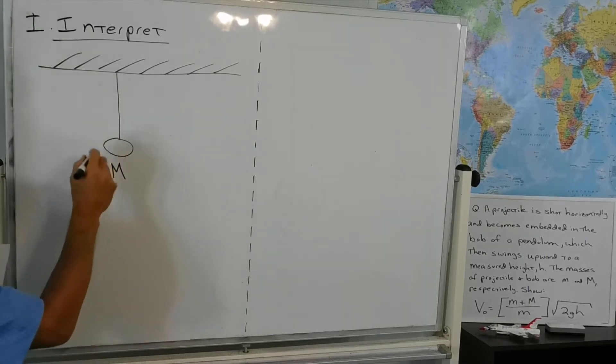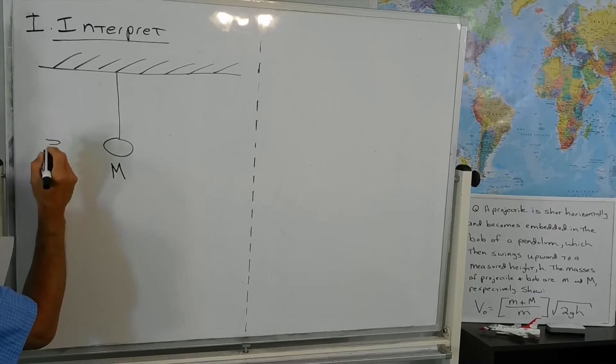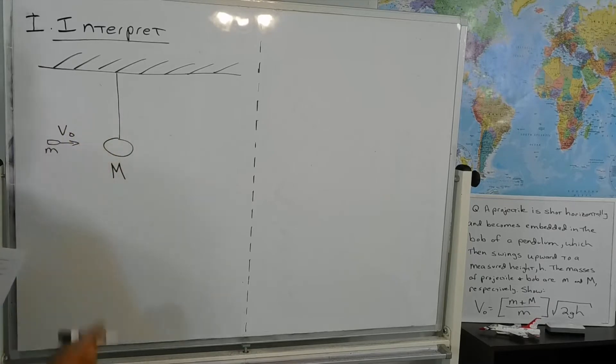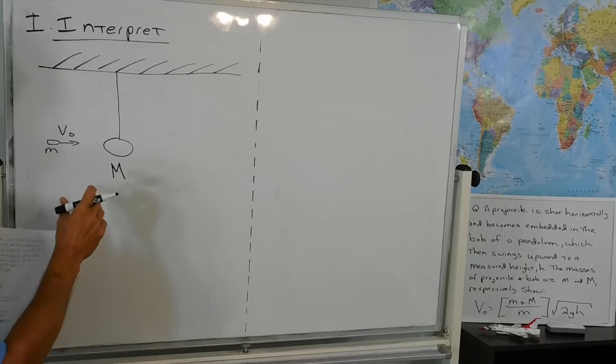Let's take a little care with our m's here. The uppercase M belongs to the pendulum bob. The lowercase m belongs to the projectile. In this case, we're suggesting it's a bullet, but it could be another projectile.